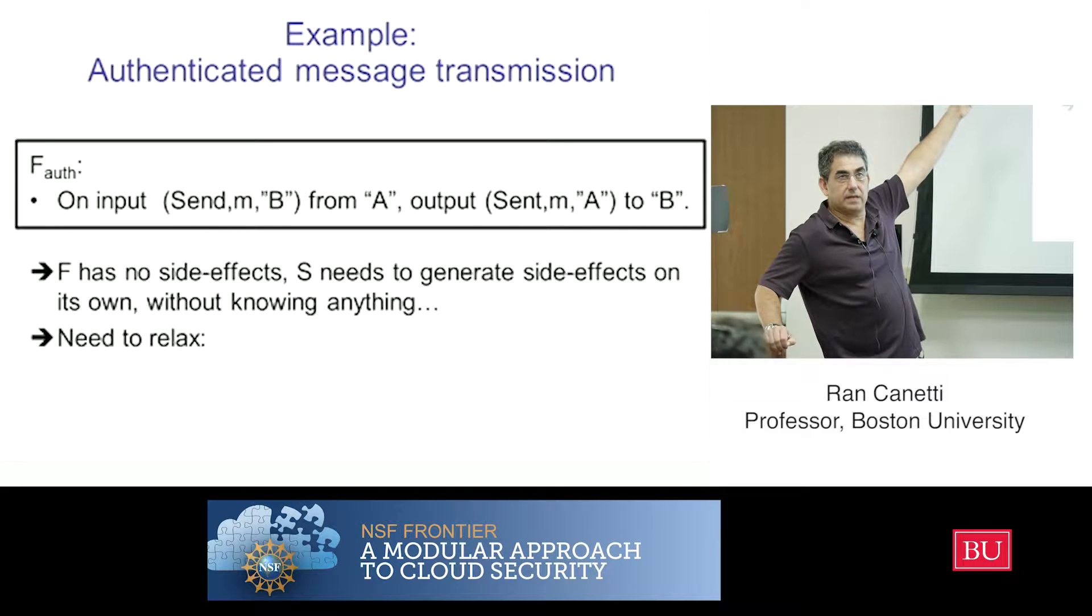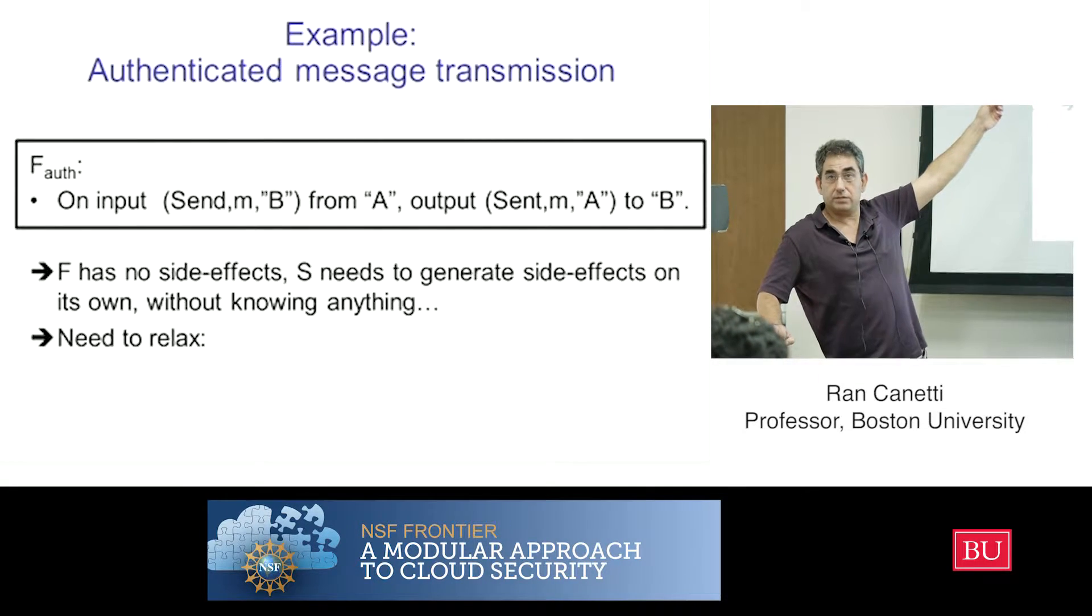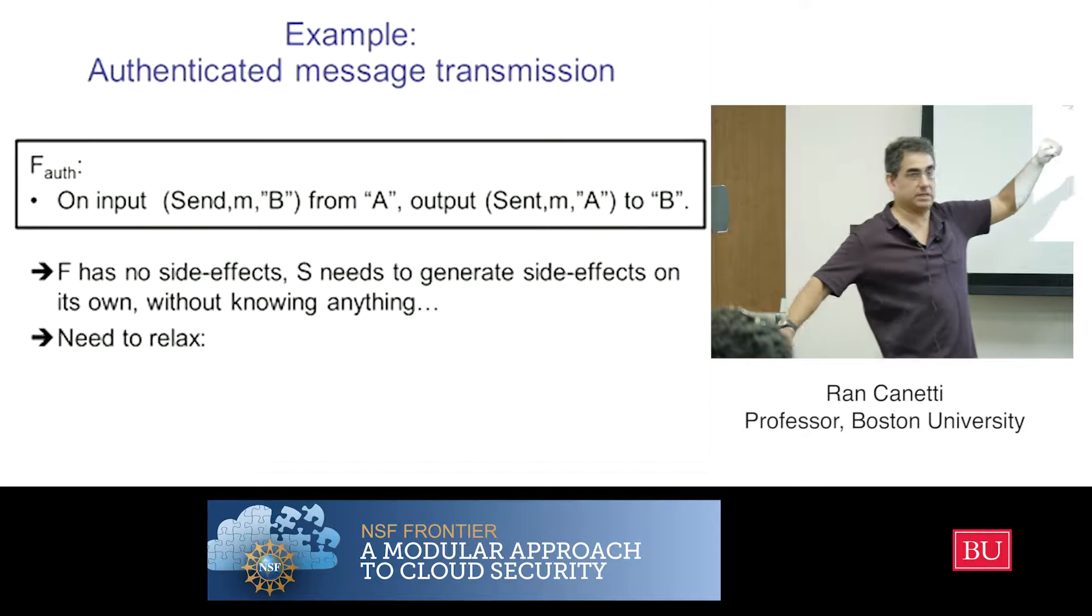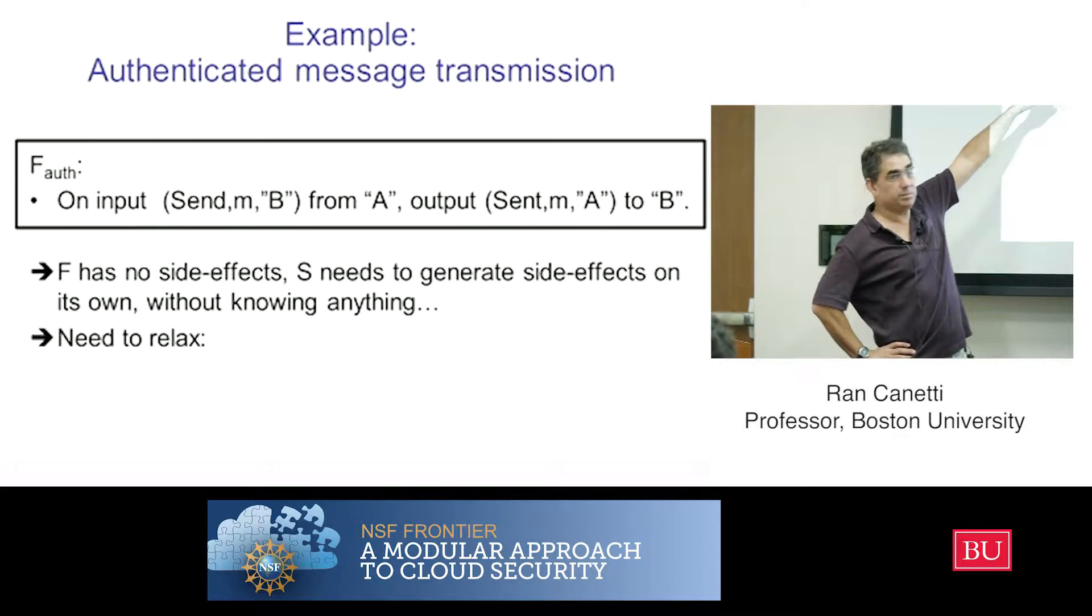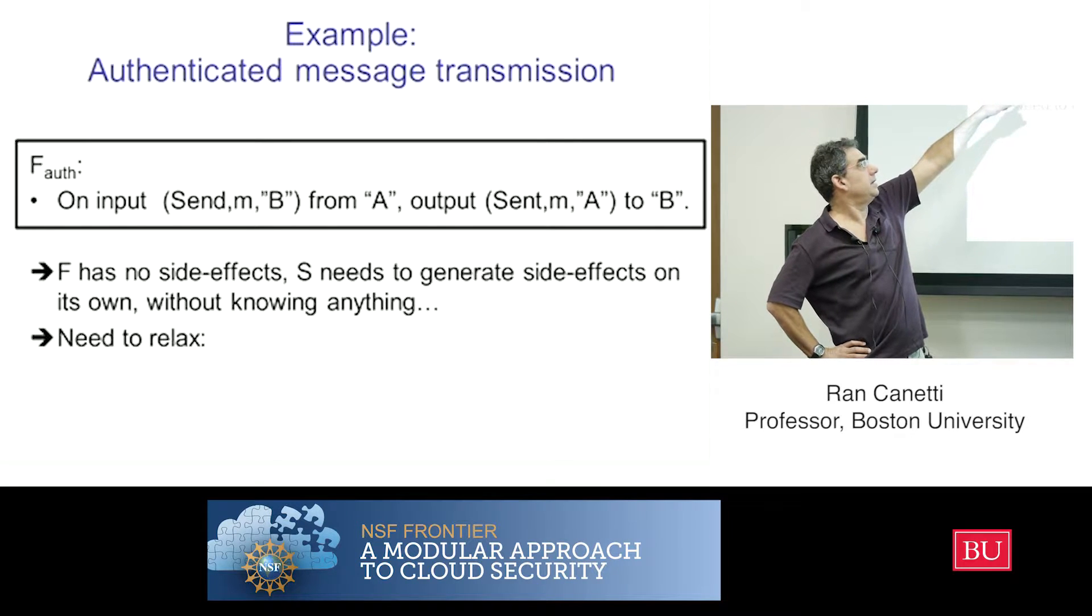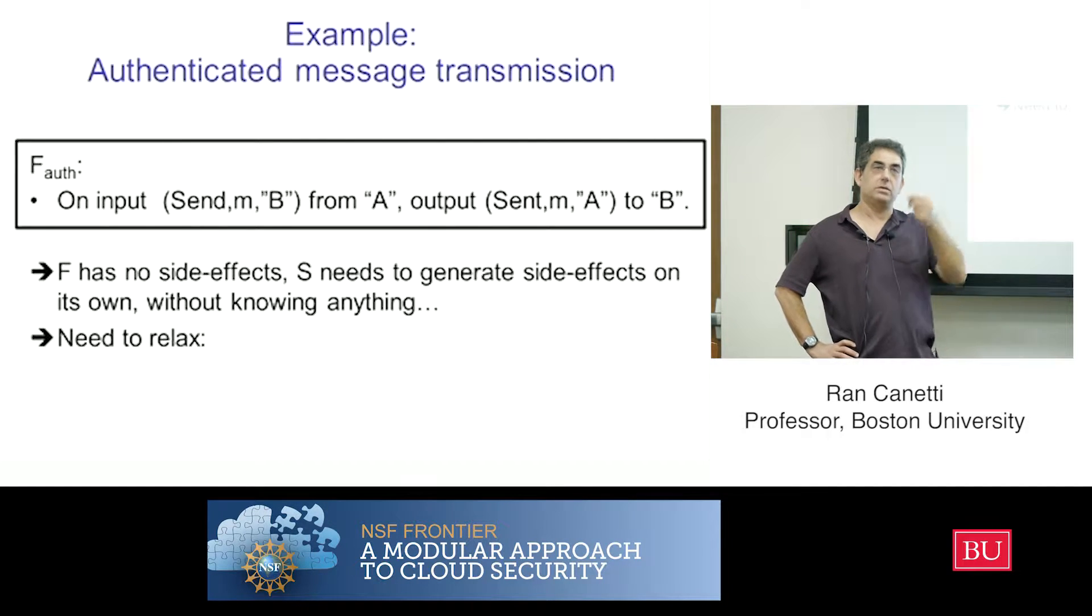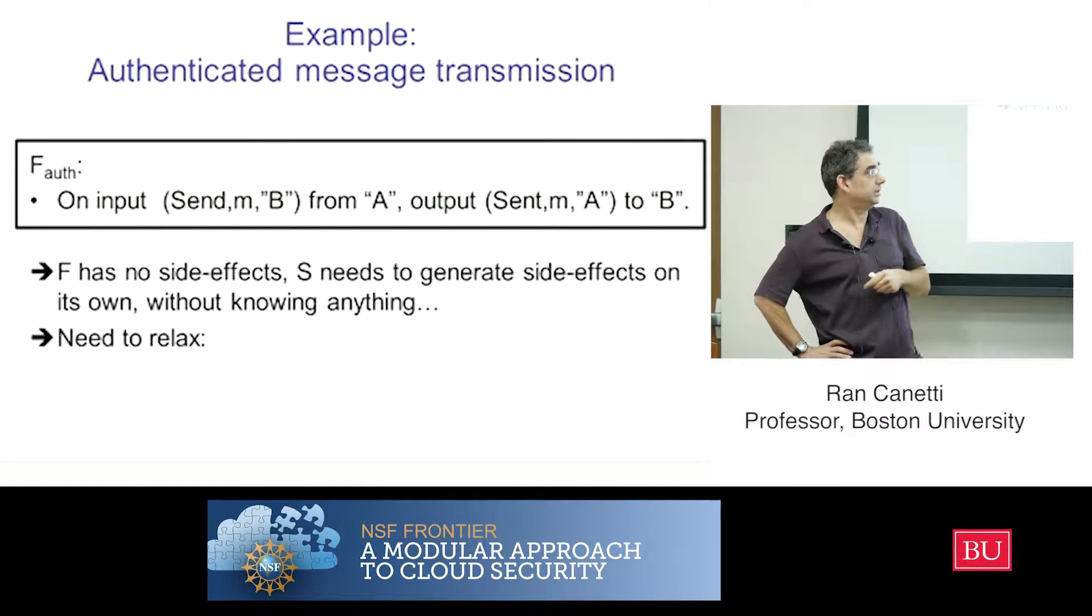So how would I write this service? I'm getting an input from some entity which has identity A, and somehow I have to know that's going to be in the system model. This input says send a message M and identity B. Then I'm going to output on my other port to identity B, which I'm supposed to know how to send things to identity B. That's again a system model. I'm going to send this message M.